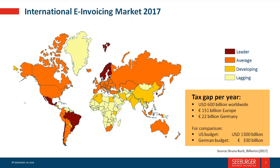The United States doesn't really have any regulations around e-invoicing, but countries around the world are slowly adopting regulations, and it's going to be important to be able to interact with those countries as these regulations become firmer in local law. The primary driver here is the ability for countries to collect tax. In the case of Mexico, they needed to collect the tax due to the government — a tax gap had developed between what should have been paid and what was actually paid.